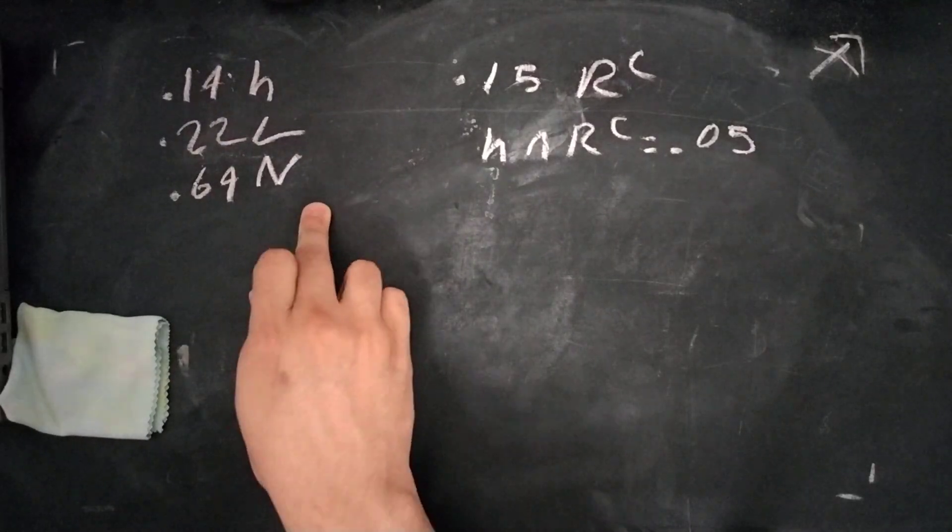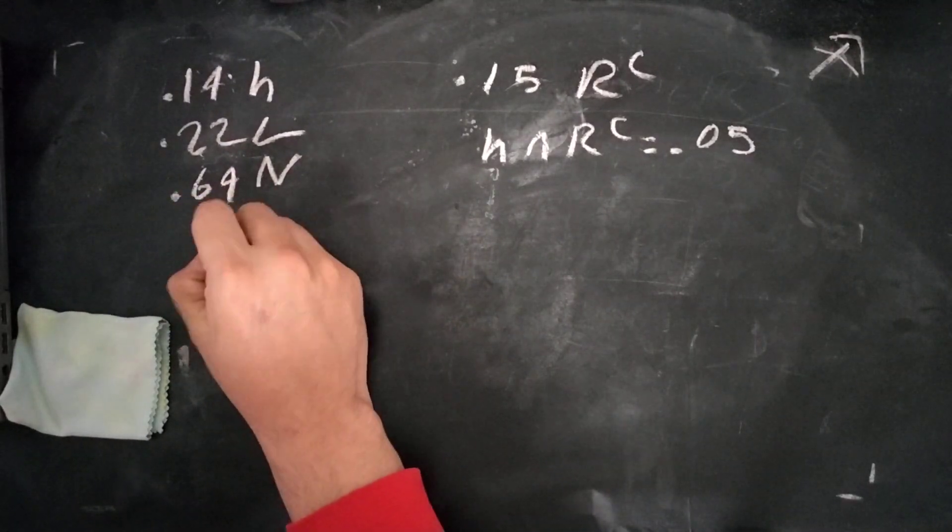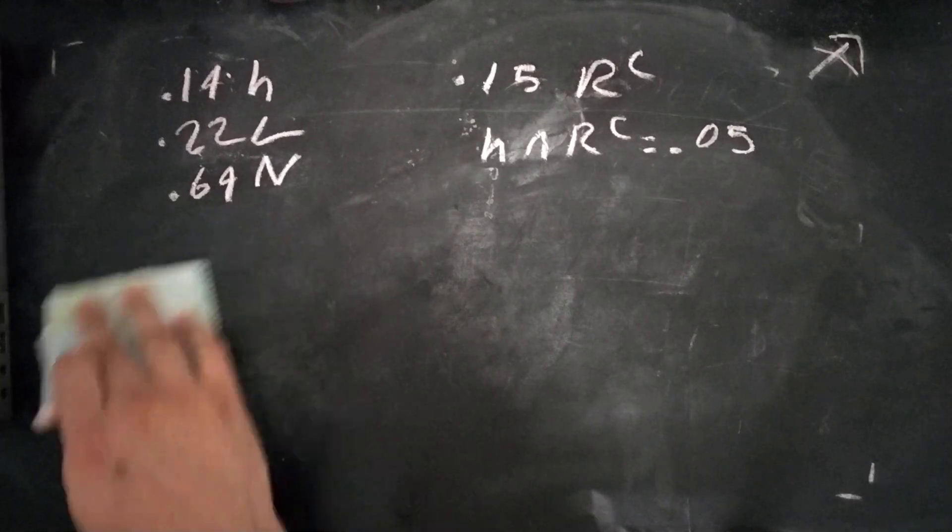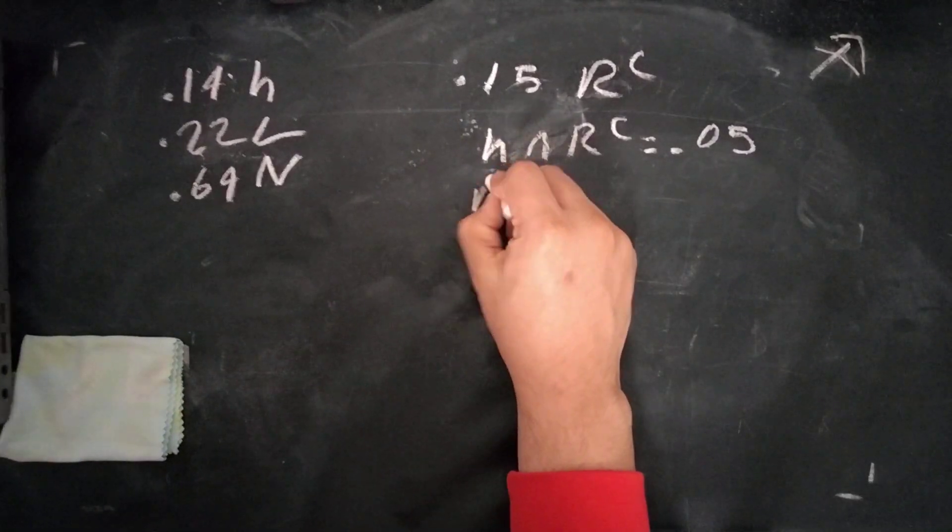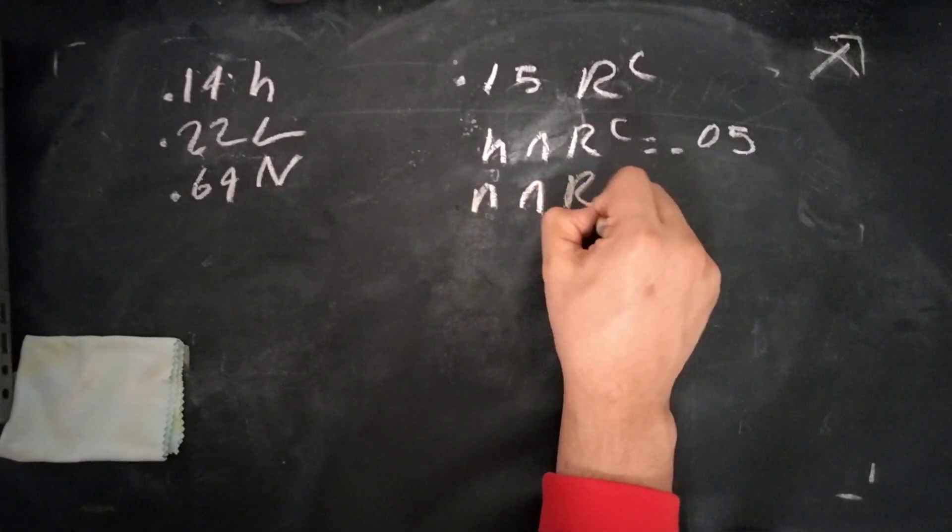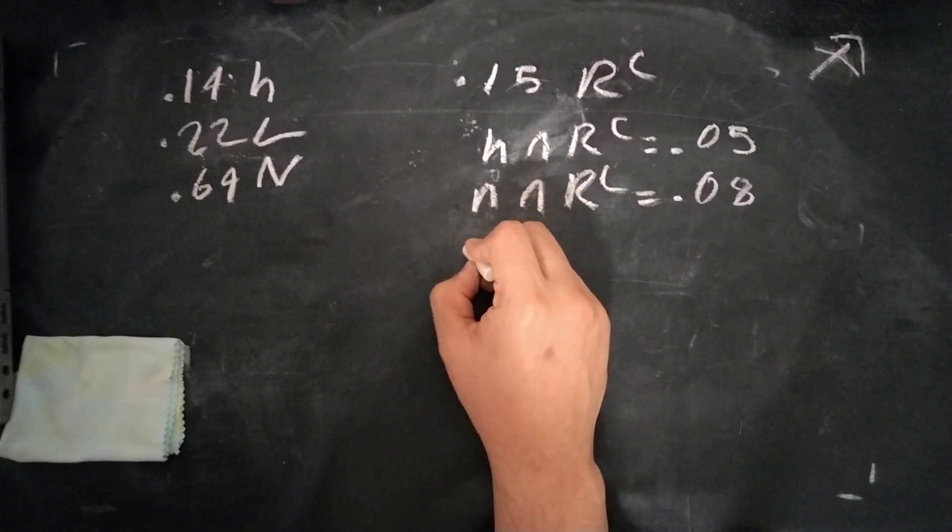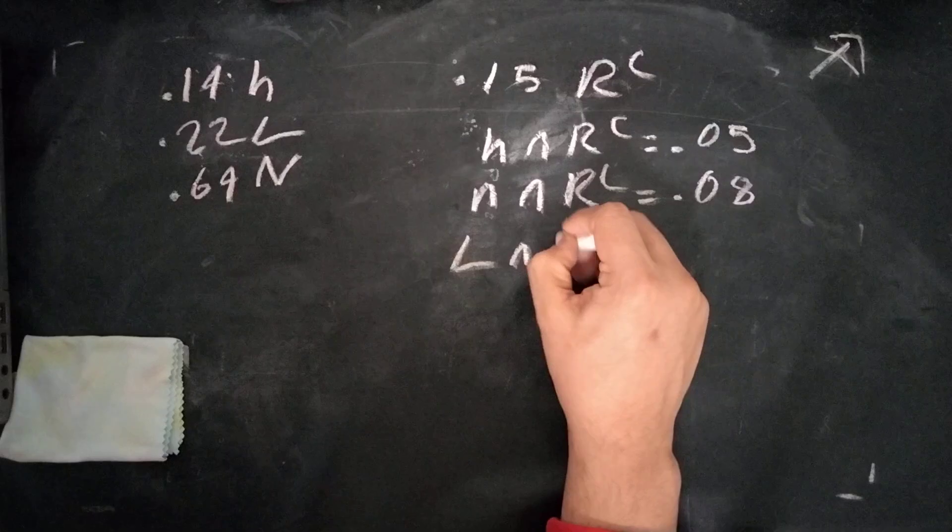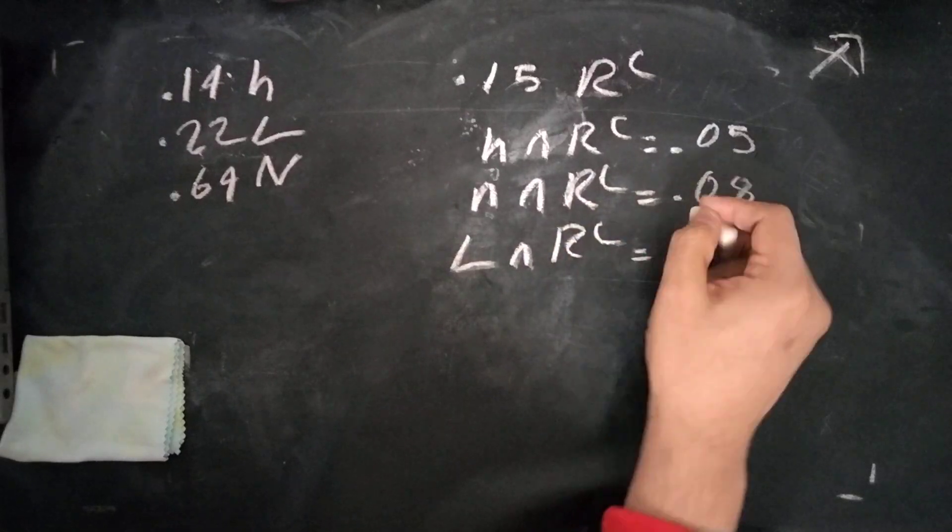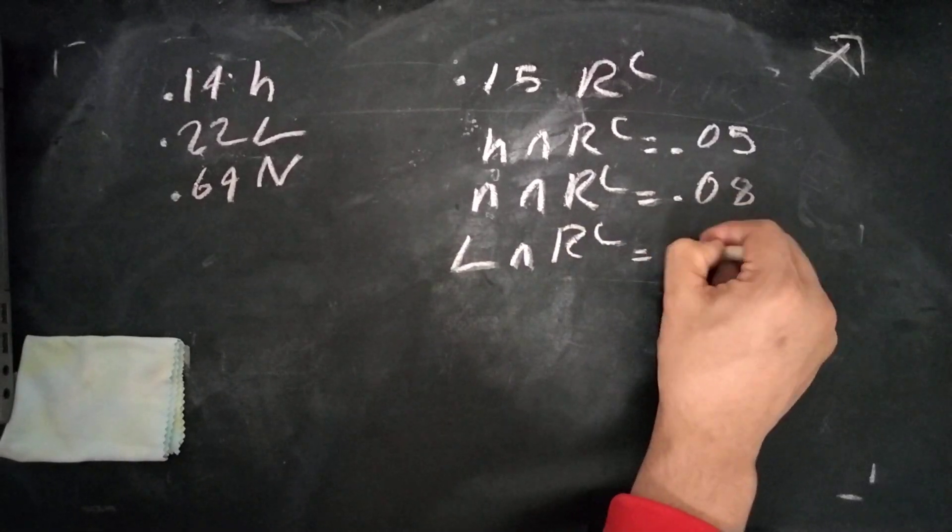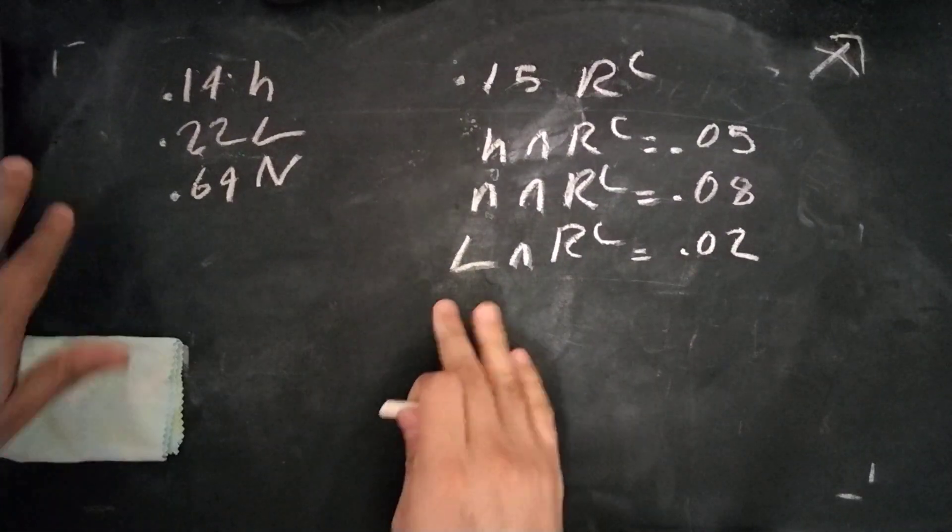Divided by 8, so this is one-eighth. That gives us normal intersect heart complement is 0.08. Which means that we know low intersect heart complement is equal to 0.02.